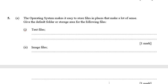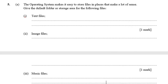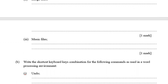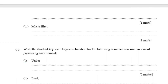Number five says: the operating system makes it easier to store files in specific places. Give the default folder or storage area for the following file types. A text file is saved in the Documents folder. An image file goes to My Pictures. A music file goes to My Music. Those are the default locations.